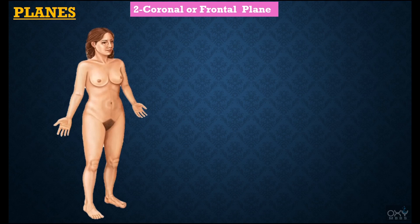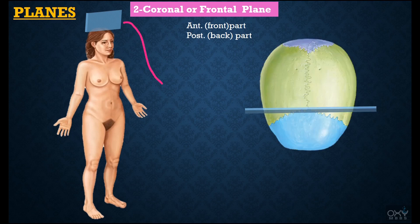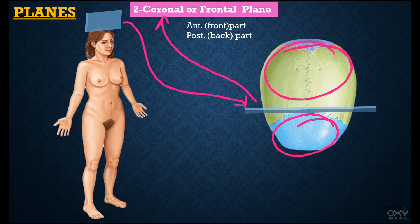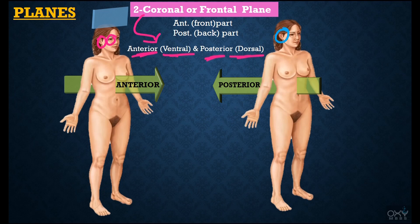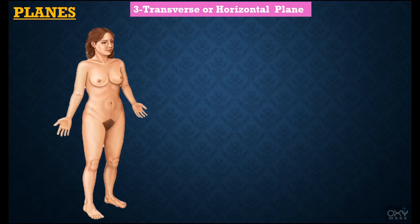Coming to our next plane: the coronal or frontal plane. This is an imaginary vertical plane which passes through the body in such a way that it divides the body into anterior and posterior parts. As this plane passes through the coronal or frontal suture, it is called the coronal or frontal plane. The anterior part is also called ventral, and the posterior part is also called dorsal. On the basis of this plane we have two anatomical terms: ventral and dorsal. For example, the eyes are anterior or ventral to the ears, or the ears are dorsal or posterior to the nose and eyes.